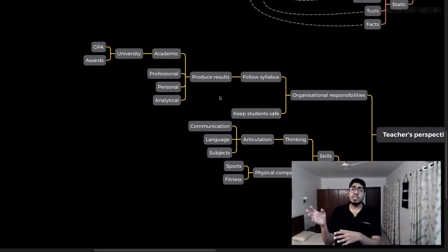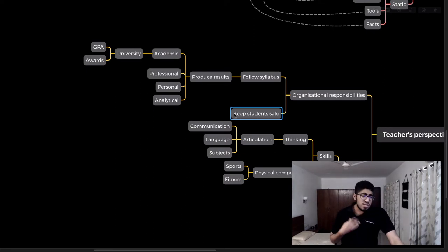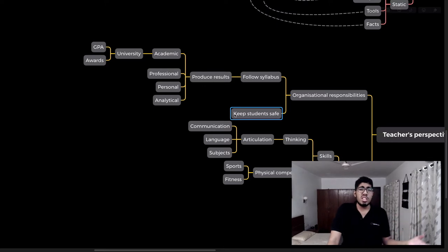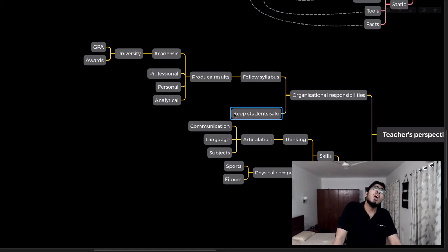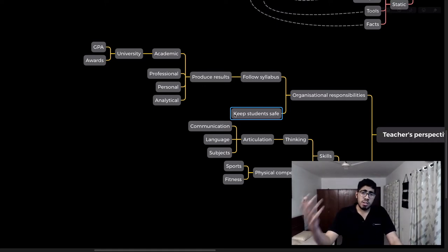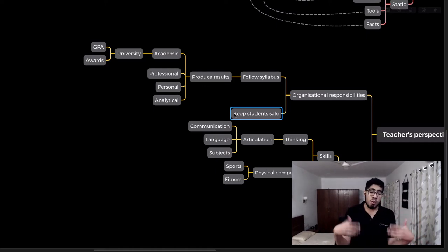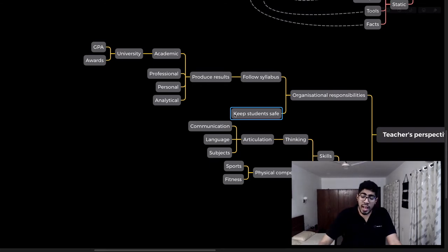From an organizational perspective, one responsibility of teachers is to keep students safe — not just from physical harm but from mental harm as well, such as protecting them from sensitive subjects. There is a concept called anti-fragility that Jonathan Haidt introduced, which relates to whether students should be exposed to uncomfortable topics. The job of an educational institution like a university is to facilitate discussions of uncomfortable and controversial topics.